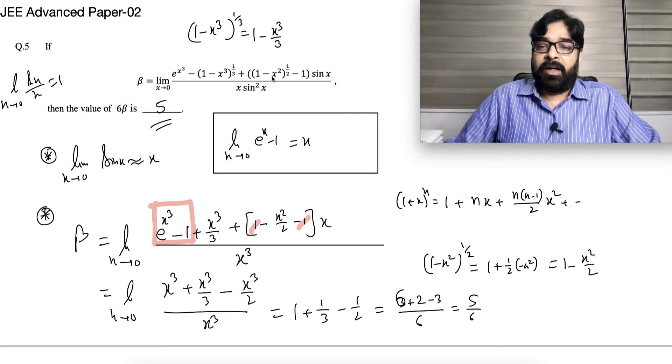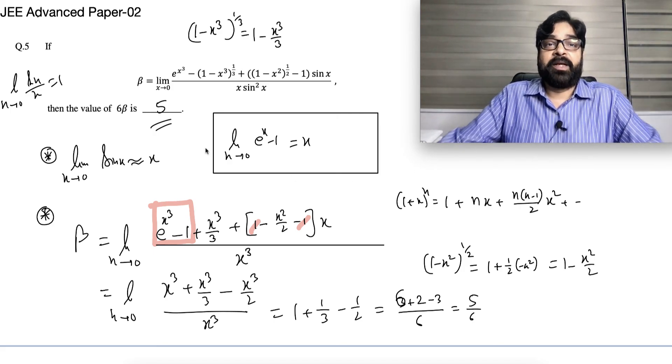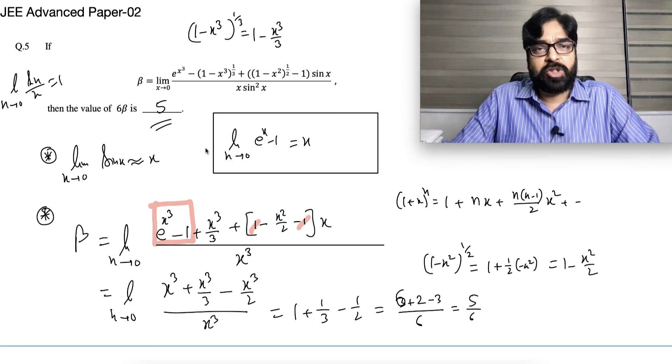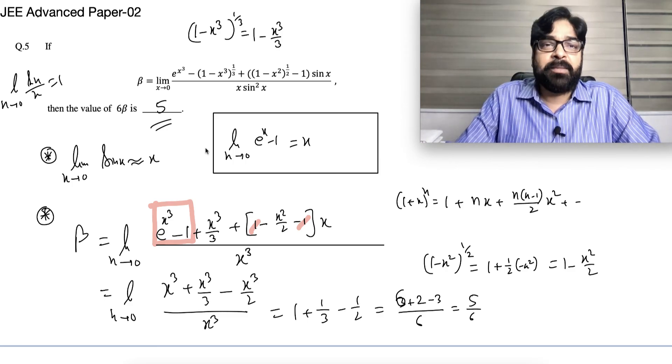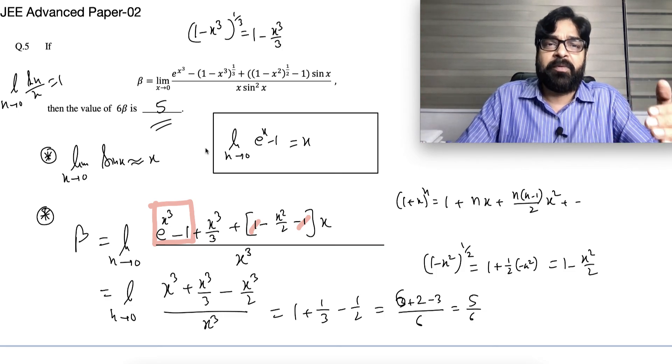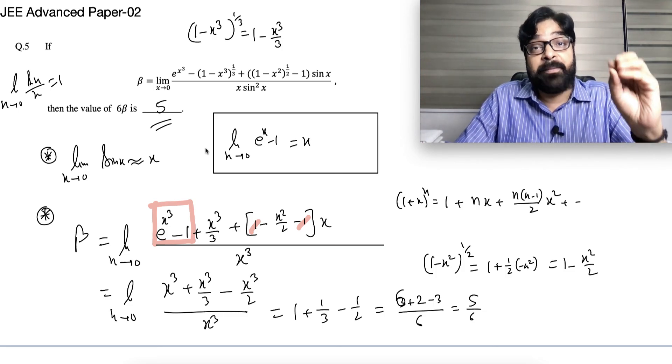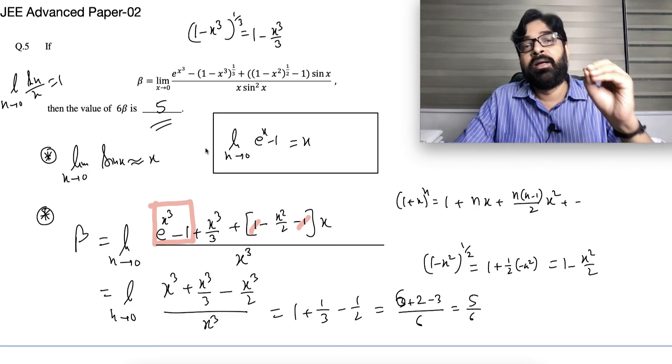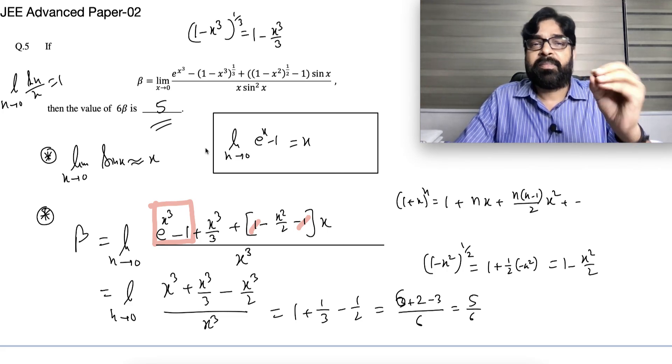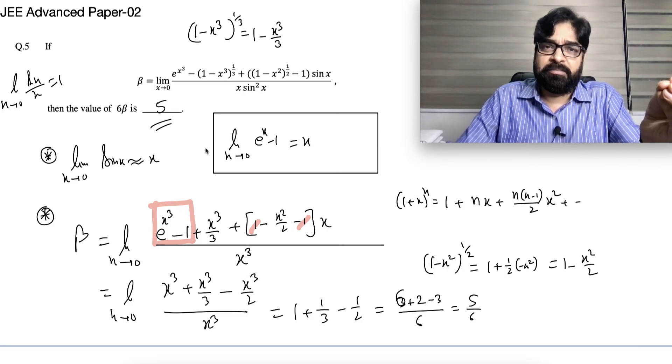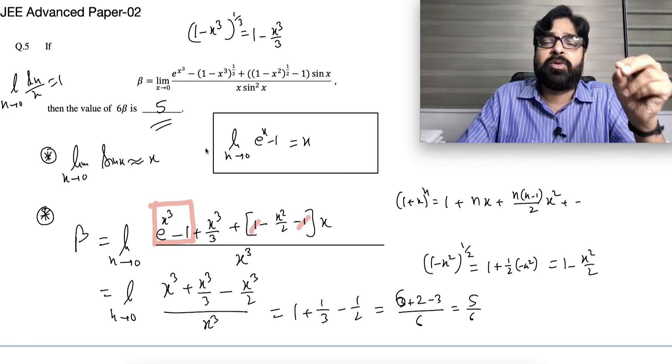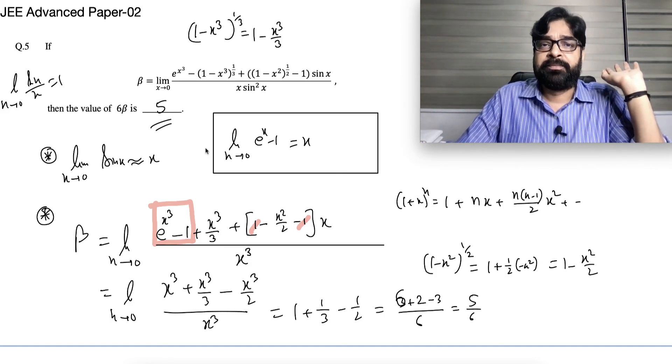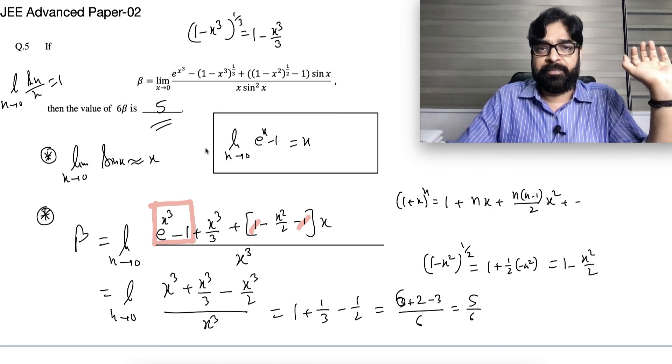So this is what this question is about. Further, I will be discussing, two limit questions were there I discussed. Next, we'll be talking about the complex number question, and slowly one by one all questions. I am not saying that every question is a two step solution, but believe me, except 3-4 questions, all questions, including paper 1 and paper 2, maximum 1 to 2 steps. That's all. Fundamentally, if you do. That's all.